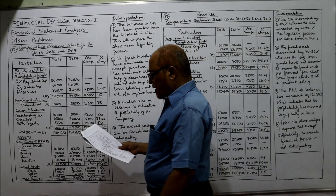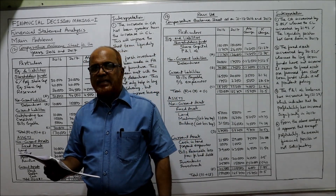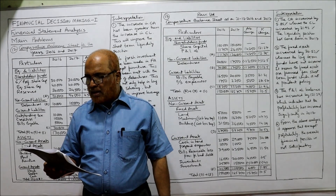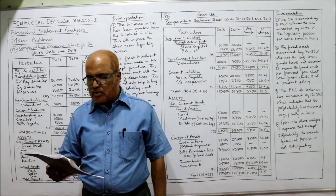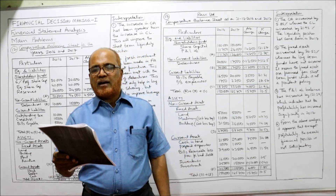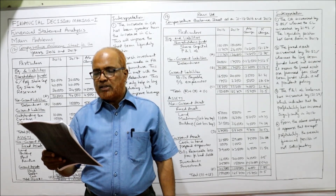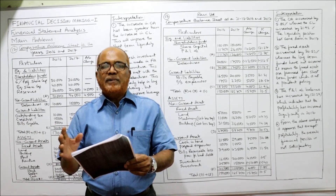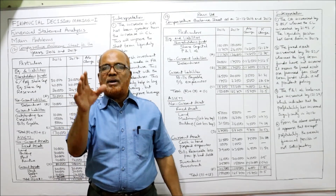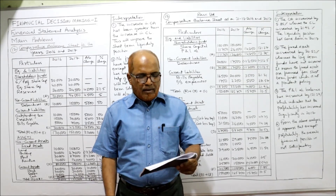Now see problem number 12. The following are extracts from the balance sheets for the year 2016 and 2017 and the supporting notes to the accounts. Prepare the comparative balance sheet and comment on the financial position. Two years are given: last year 2016 and current year 2017. The particulars include 6% preference shares, equity shares, and reserves. We have to put all these items in a systematic vertical format of the balance sheet.